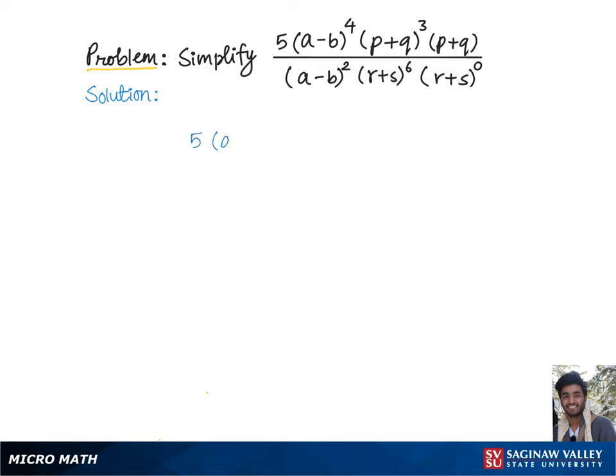To simplify 5 times a minus b to the 4th times p plus q cubed times p plus q over a minus b squared times r plus s to the 6th times r plus s to the 0.